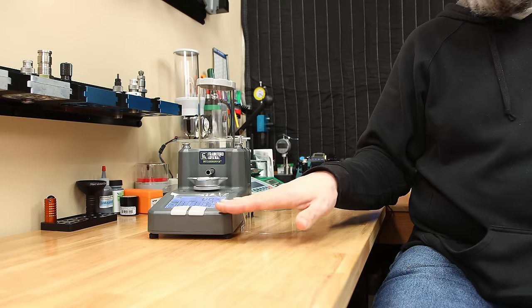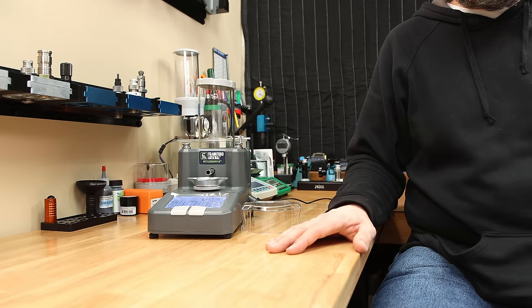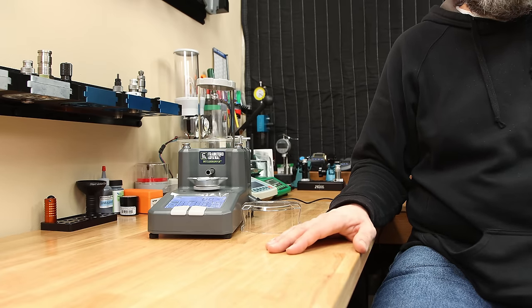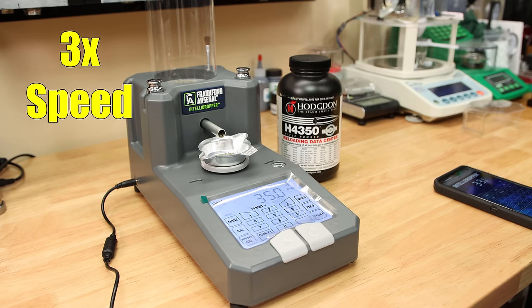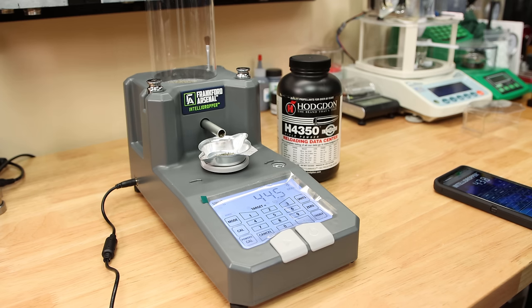I can't speak for you, but personally, I think that's pretty good results for one of the most affordable powder dispensers that there is. One of the features you're certainly going to want to take advantage of with this IntelliDropper is its powder calibration. You're going to want to run it every single time you change powders. It doesn't take too long, and the speed at which this thing can accurately dispense powder is really pretty impressive.